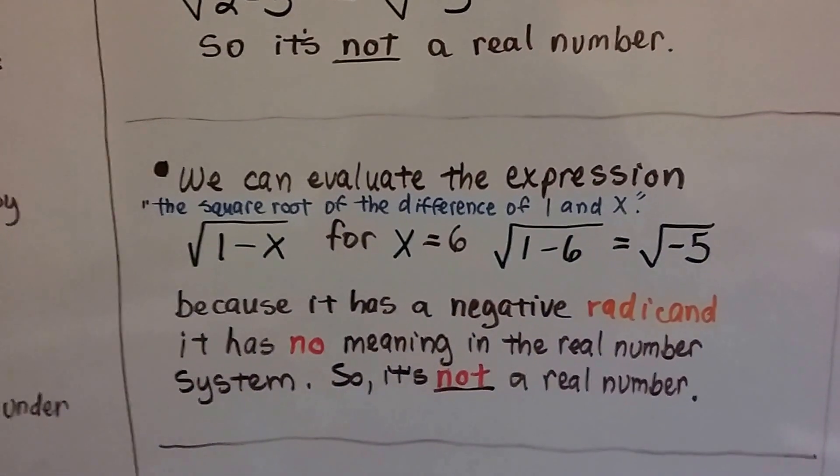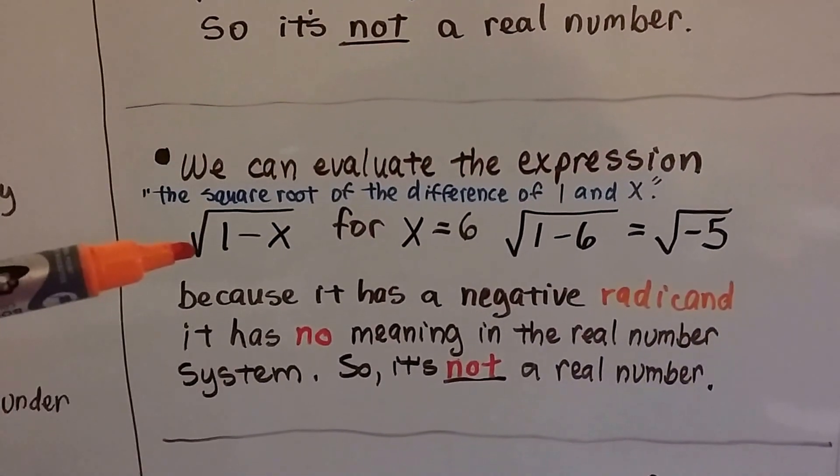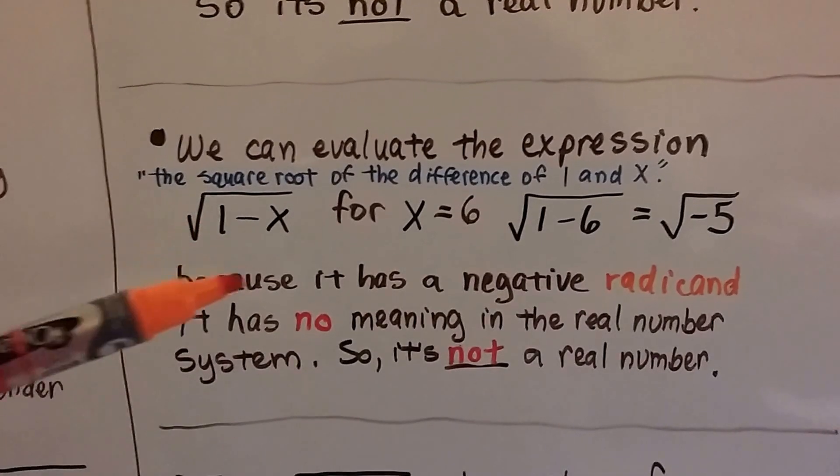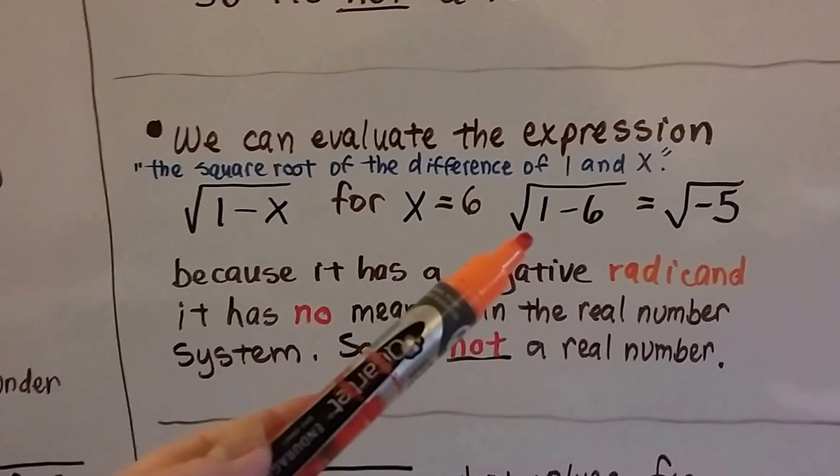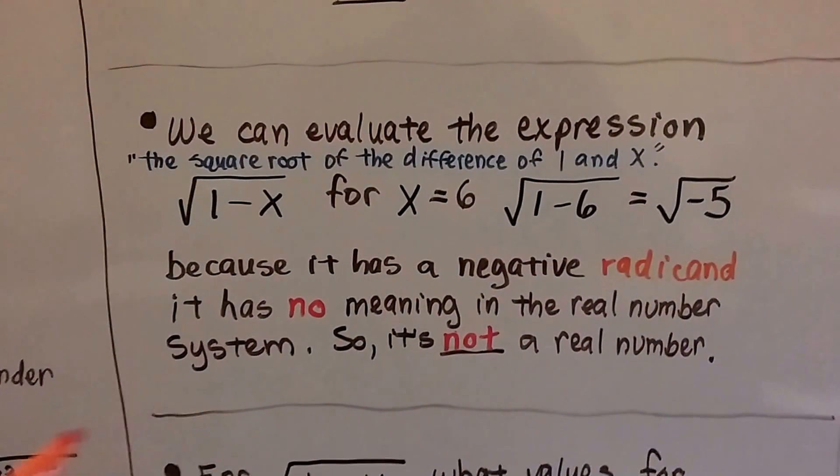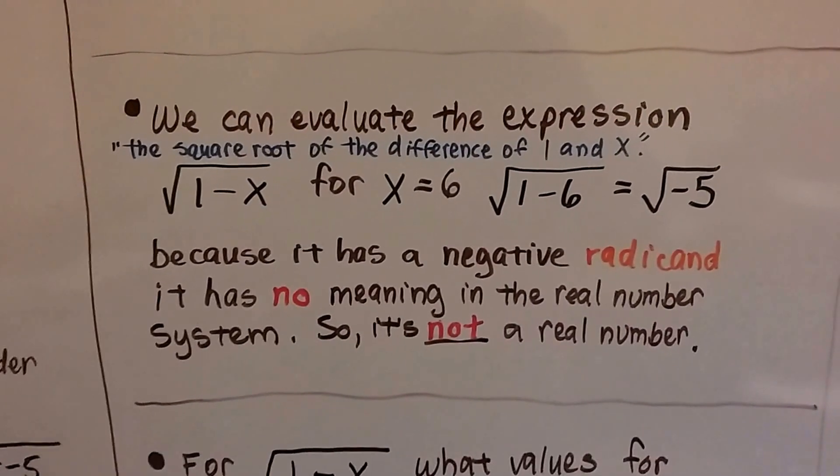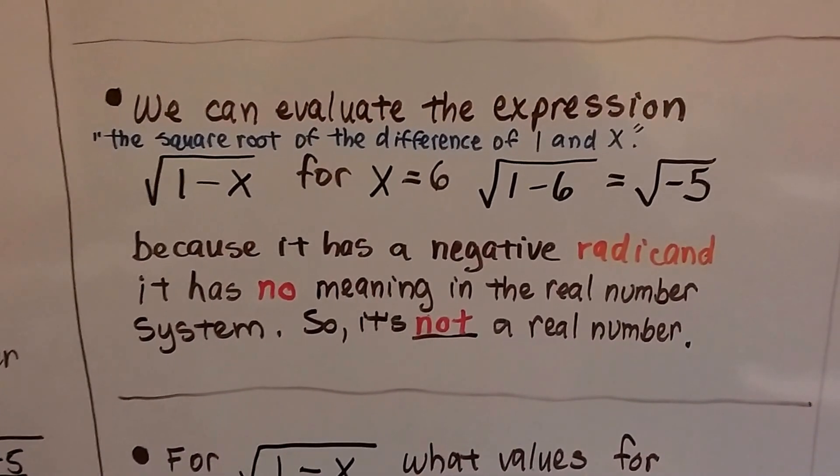And we can evaluate the expression. This is read as the square root of the difference of 1 and x. If x is a 6, well then we have 1 minus 6. That gives us a negative 5. It has a negative radicand, so it's got no meaning in the real number system. It's not a real number.